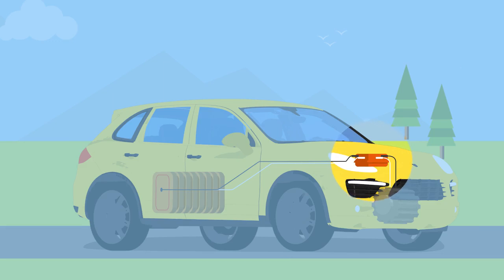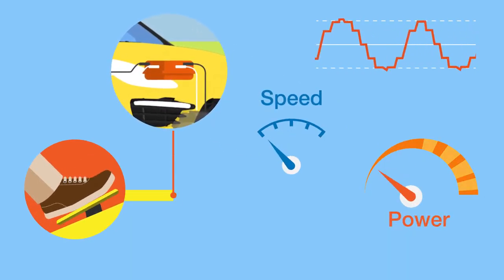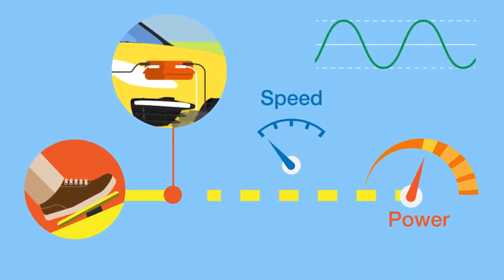This is where the power semiconductor comes into play. It is designed to chop the direct current. The higher the chopping frequency, the purer the sine wave, and the lower the energy loss.